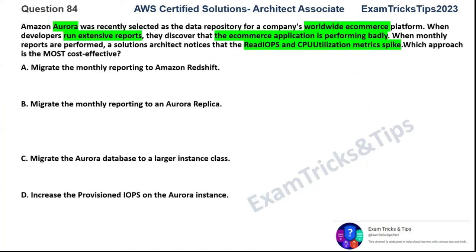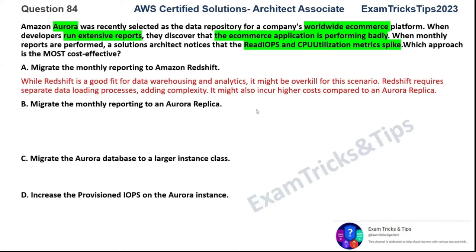Option A: migrate the monthly reporting to Amazon Redshift. In theory this could work — Redshift is a good fit for analytics — but it's overkill for a reporting application that doesn't need a full data warehouse. If you were talking about a full data warehouse solution with complex analytics, maybe. But for simple reports, it's going to be a super expensive solution. Redshift is much more expensive than an Aurora replica, and it doesn't meet the cost-effective requirement. Option A is ruled out.